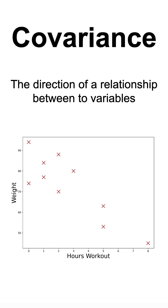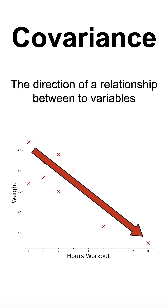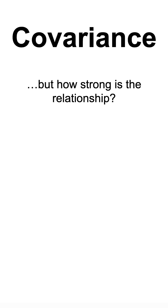Inversely, if we measure the covariance between the number of hours a person exercises and their weight, we would observe a negative covariance. On the other hand, the covariance doesn't tell us how strong that relationship is, and to measure that, we have to rely on correlation, which isn't affected by the scale of each variable.